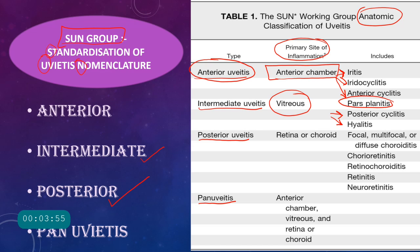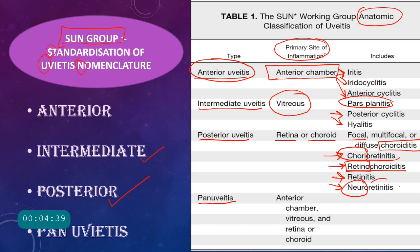Posterior uveitis involves the retina and choroid. It is classified into focal, multifocal, or diffuse choroiditis when only the choroid is involved; chorioretinitis or retinochoroiditis, where the first part of the term indicates the primary site of inflammation; retinitis when only the retina is involved; and neuroretinitis when both the disc and retina are involved.